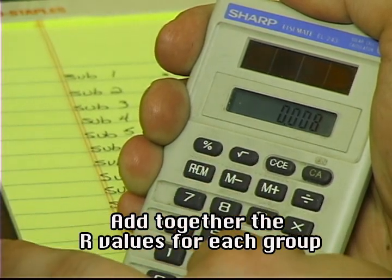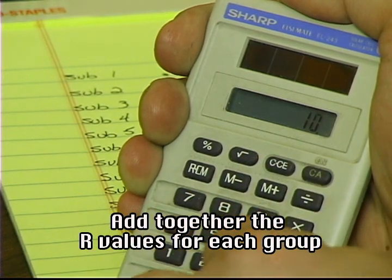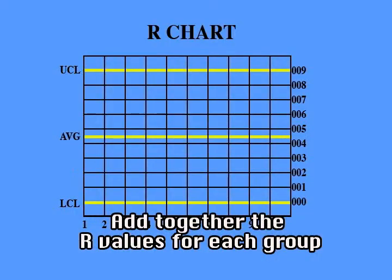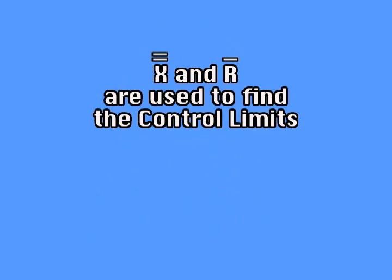Next, compute the r-bar value. Add all the r values together and divide by the number of values. The r-bar value is the center line on the r-chart. These two values, the x-double-bar and r-bar, are used to compute the control limits for the control charts that will be used at the machine.